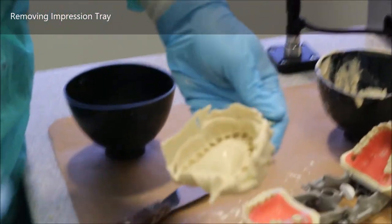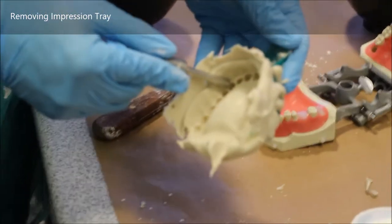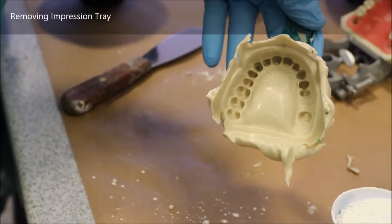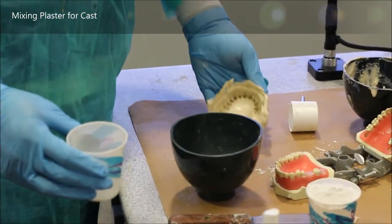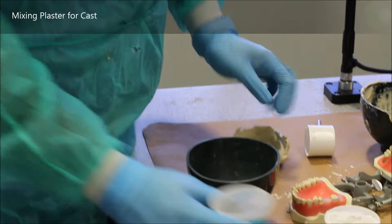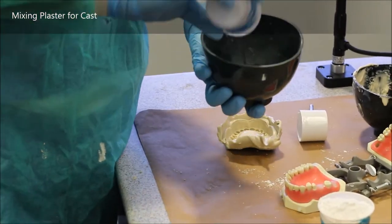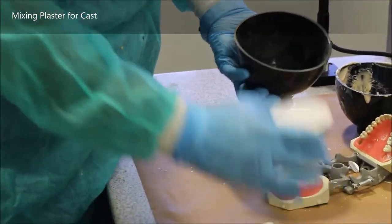You want to check your impression for any tray burn, as you can see right there in the canine. Then you want to get it ready to be poured up for a cast. Alginate impressions need to be poured up generally as soon as possible.